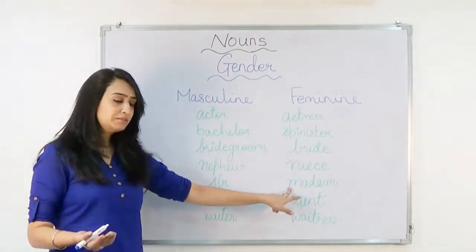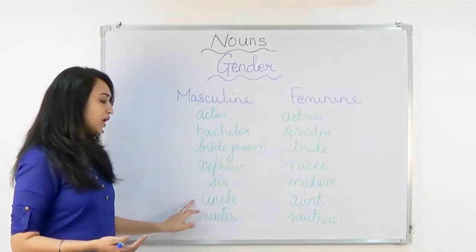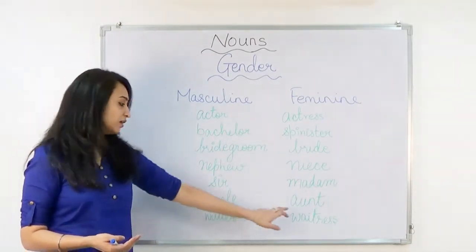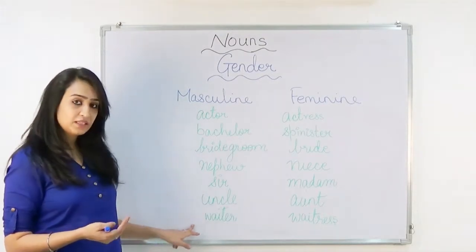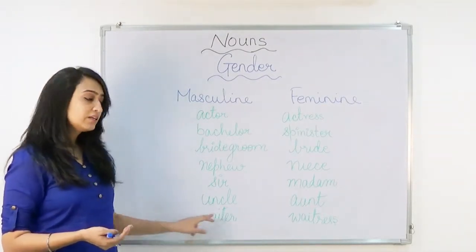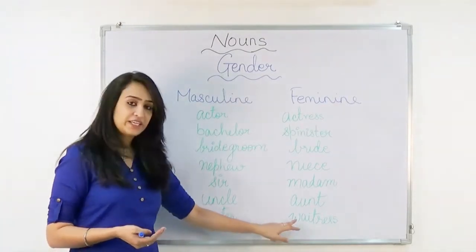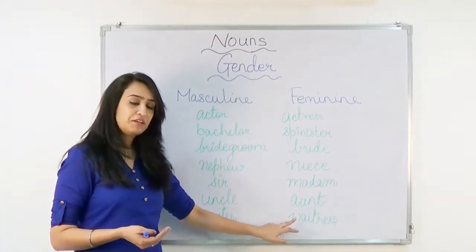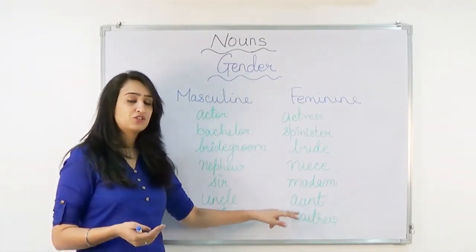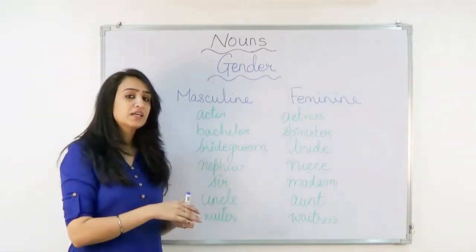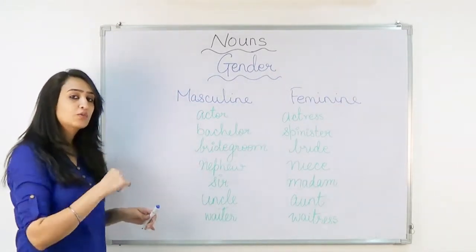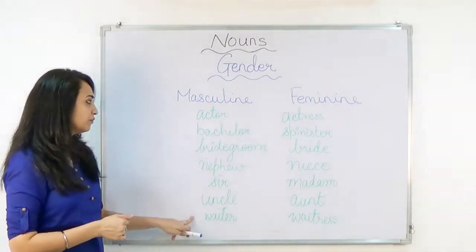Uncle and aunt. Waiter — the female form is waitress. For example: can you call the waitress? Can you call the waiter? The female form is waitress.